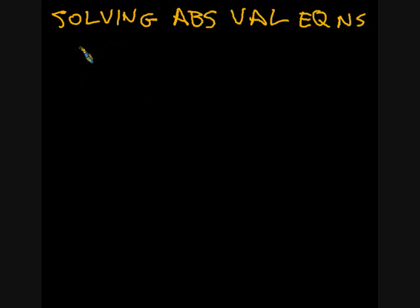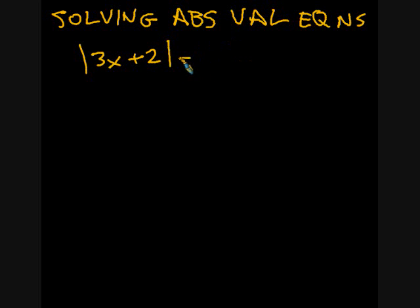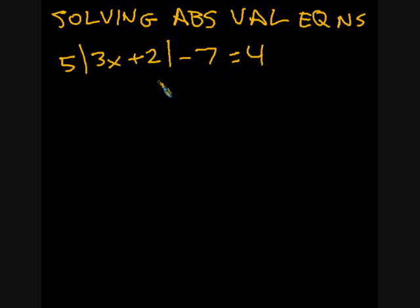Absolute value equations look a little bit like this — there's a vertical bar, then something like three x plus two minus seven equals four. Sometimes they might even have a number out front, like five times three x plus two minus seven equals four. That's a pretty advanced absolute value equation, so we'll start off with something more simple.